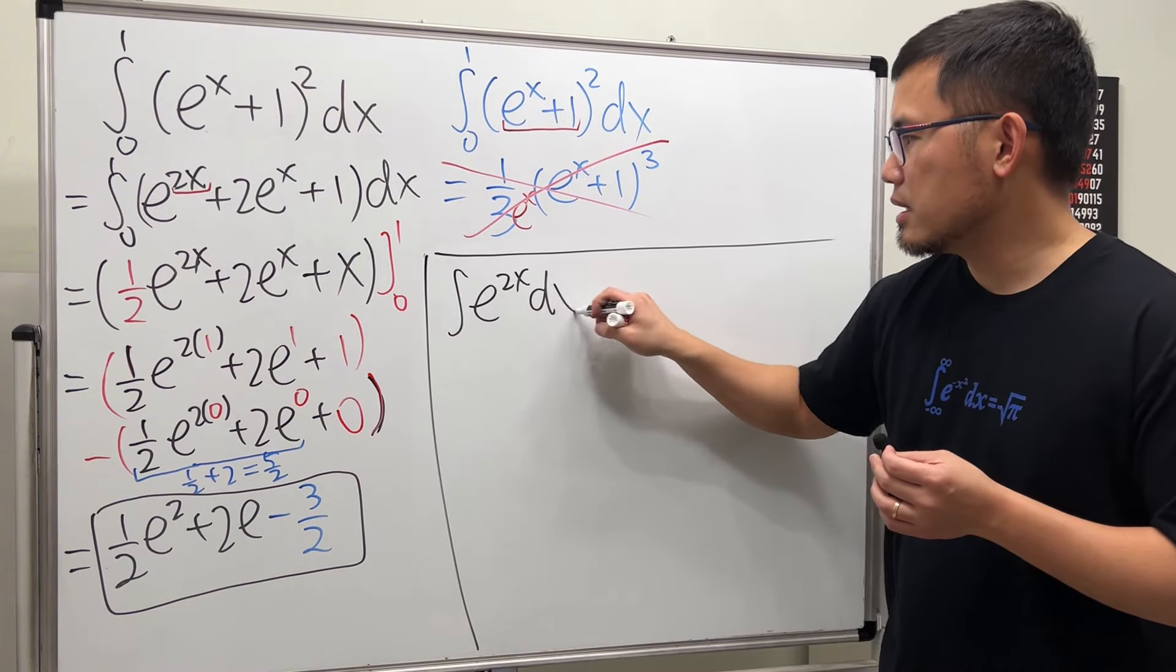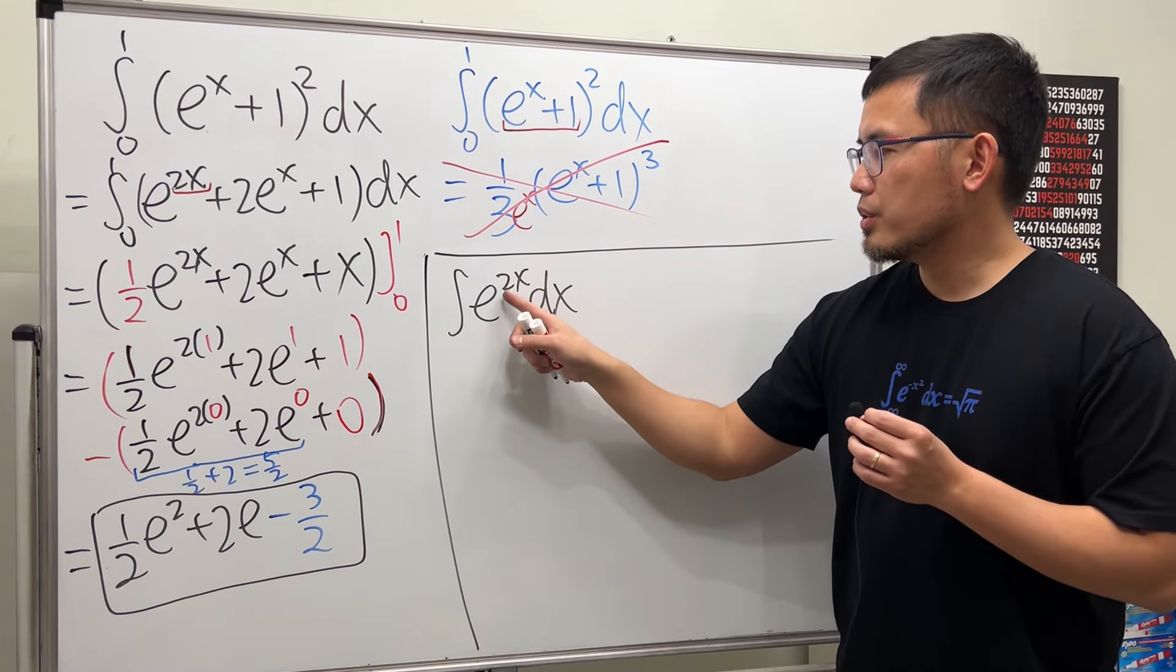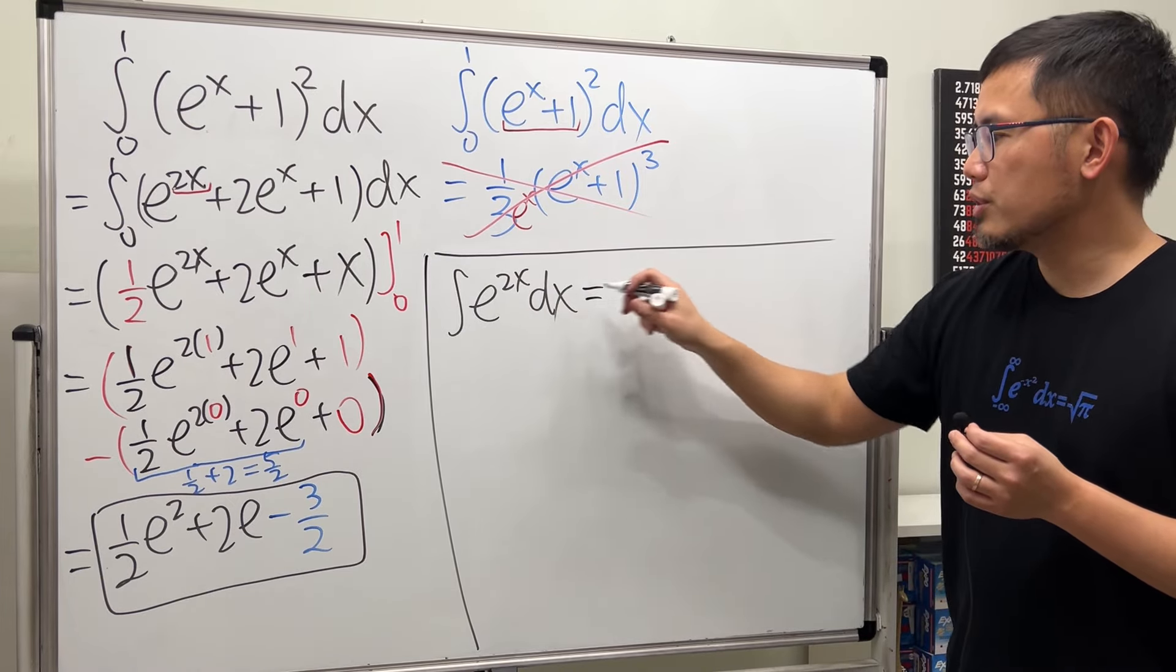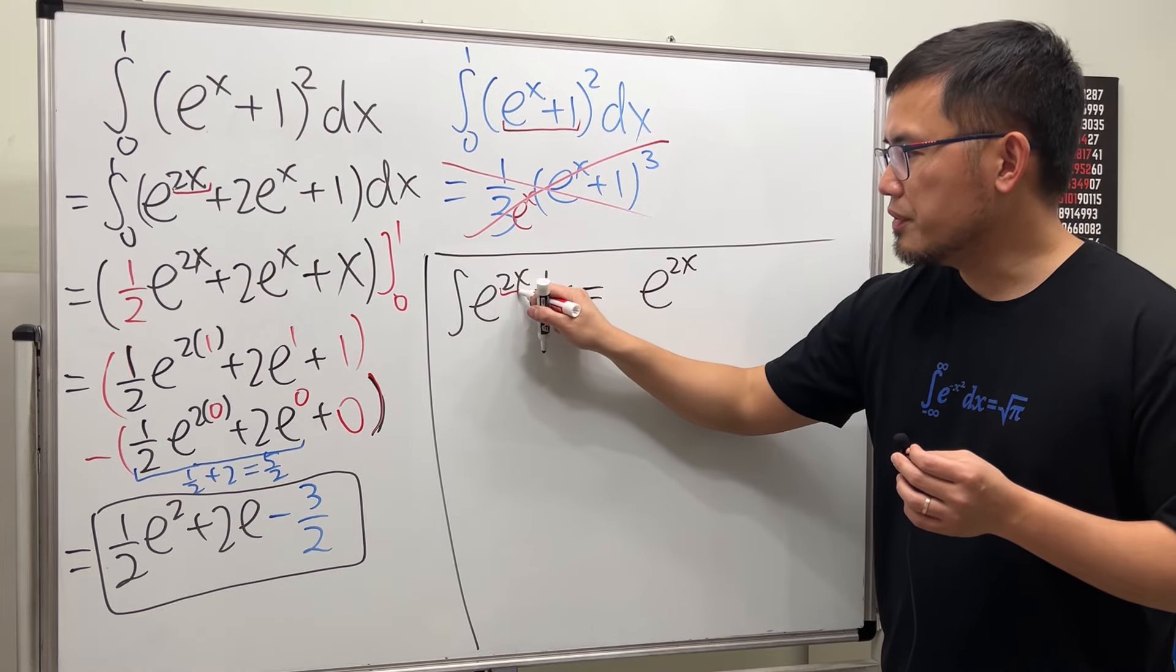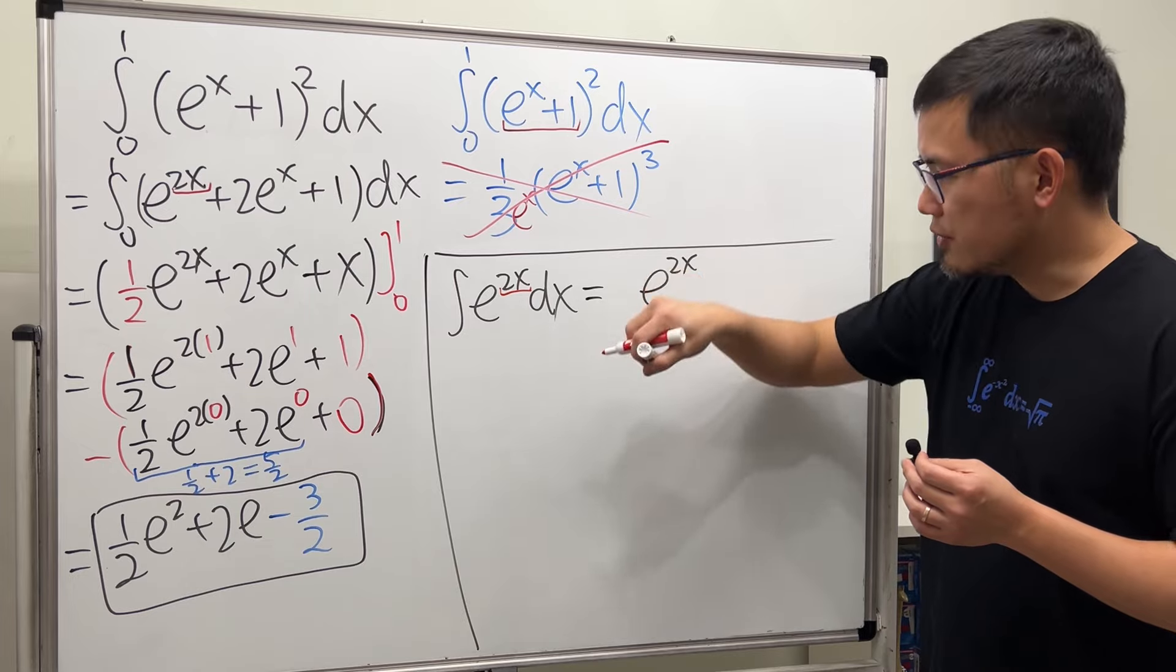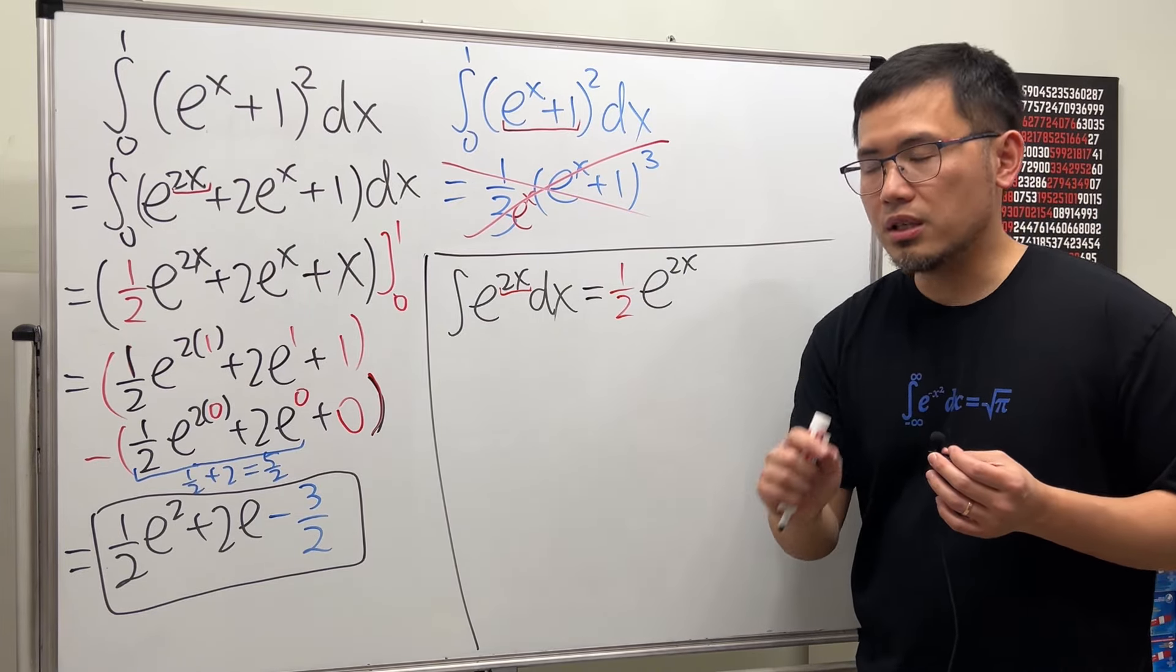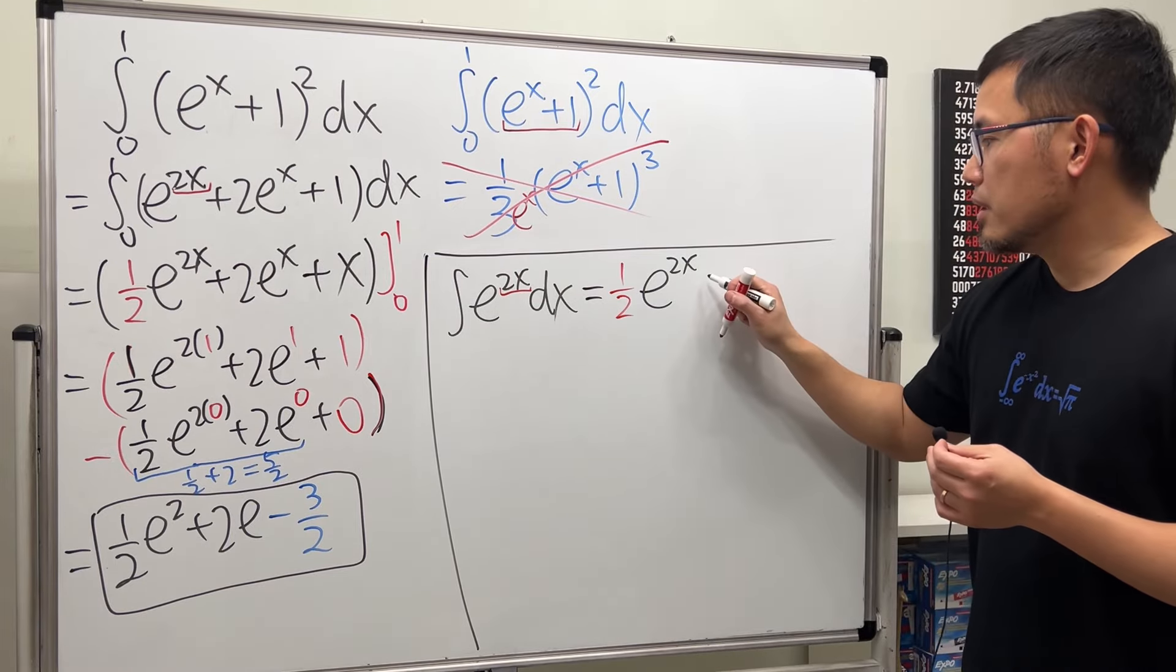Look at the inside function. It's a linear function. 2x to the first power. So when we integrate that, we first just get e to the 2x, and then the derivative of the inner function is just a number 2. So we can just divide it by that number. It's like undo the chain rule. Only if the derivative of the inner function is a constant. That's it.